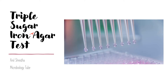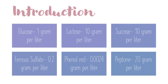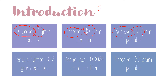The word 'triple sugar' means the agar consists of three sugars: glucose, lactose, and sucrose. Looking at their weights, glucose is 1 gram, lactose is 10 grams, and sucrose is 10 grams. So the ratio of glucose to lactose to sucrose is 1:10, meaning glucose is present in a lesser amount compared to lactose and sucrose.